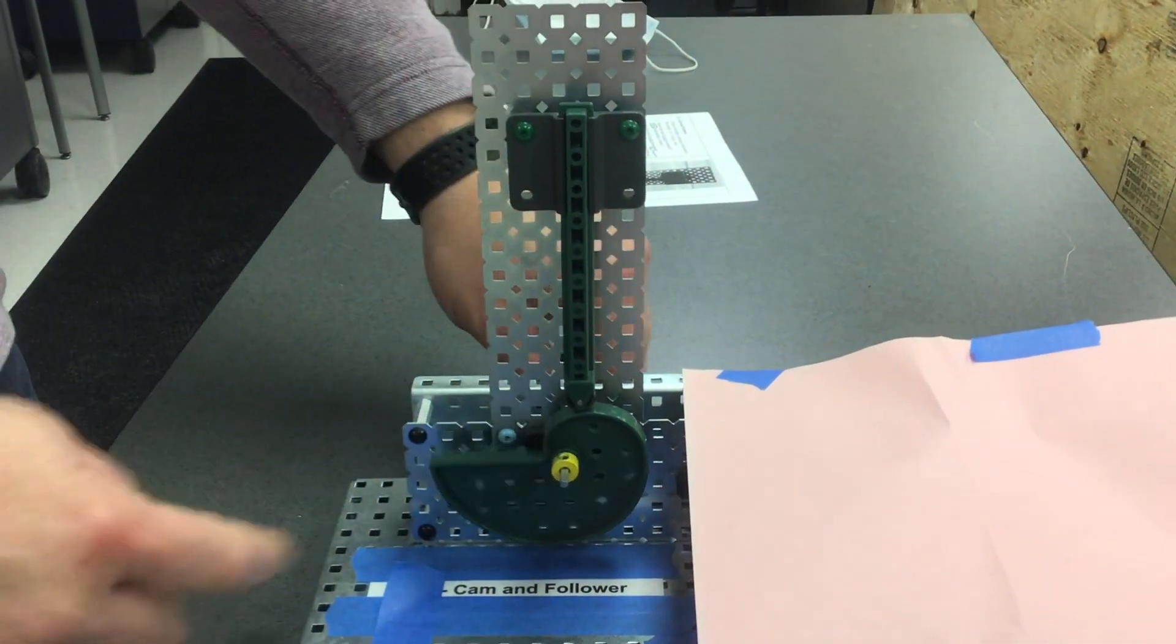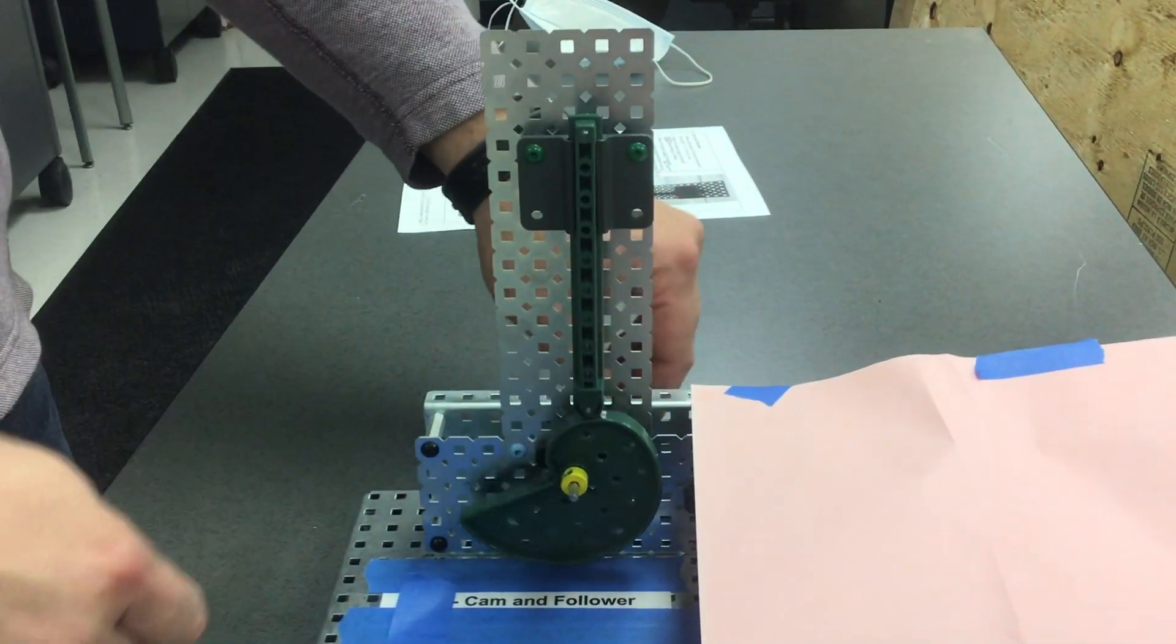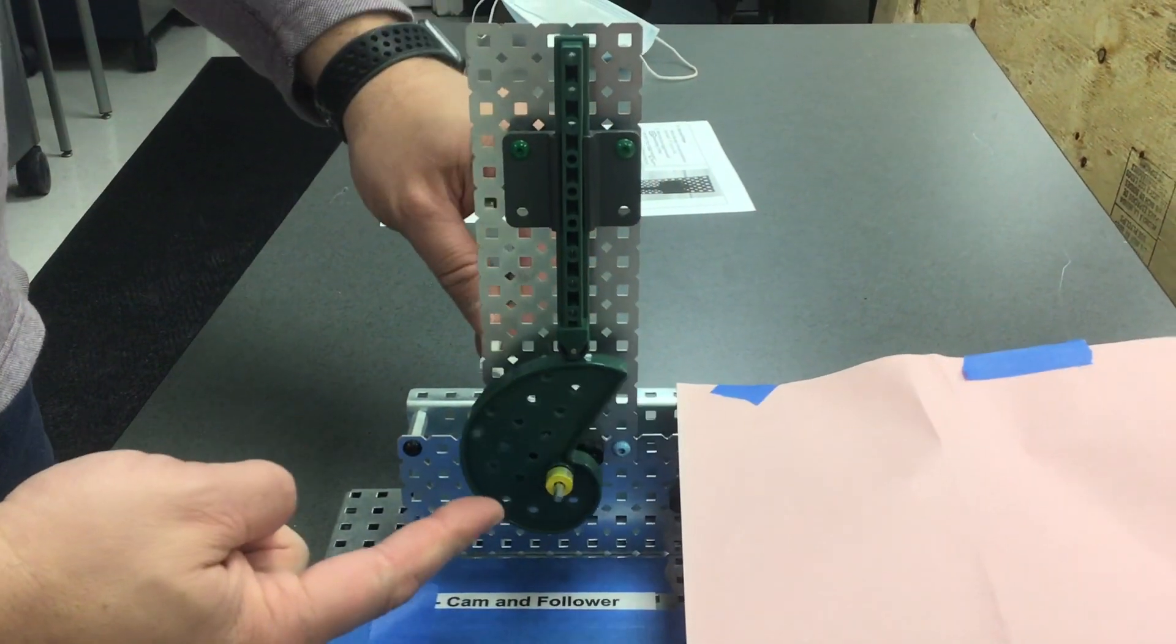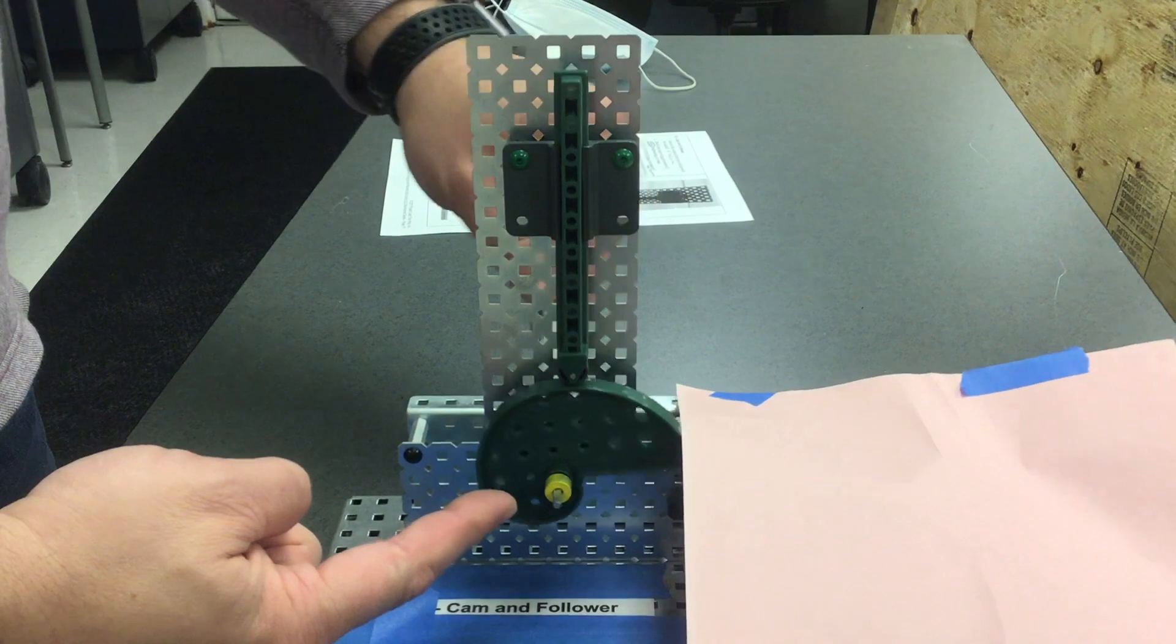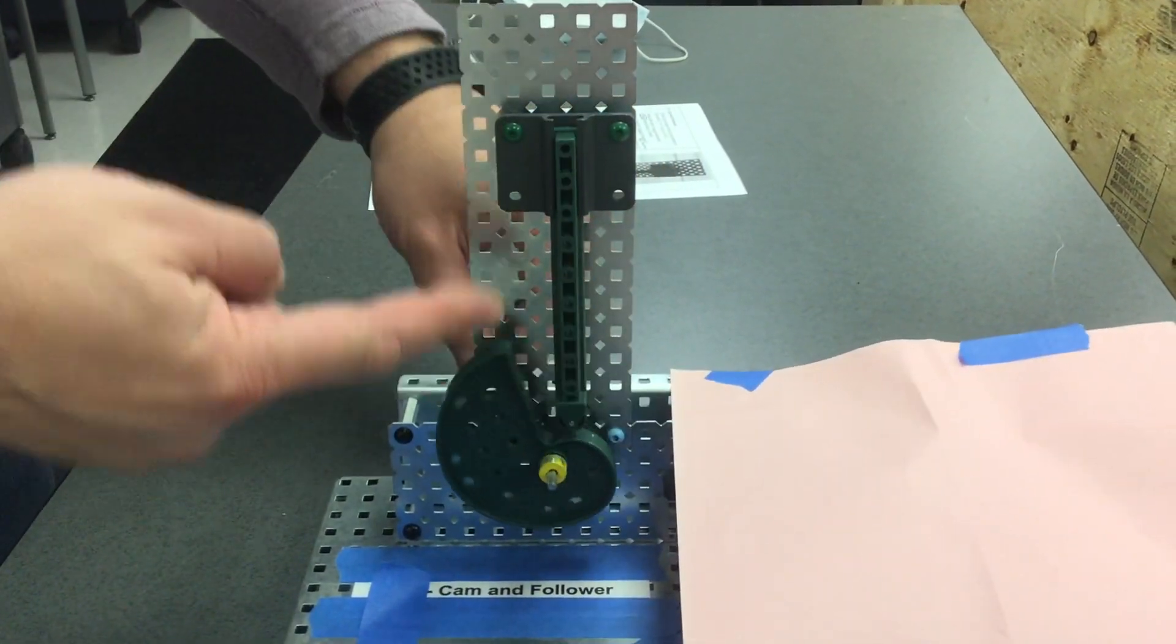We have an output movement of reciprocating. Rotary movement to reciprocating, transferring that type of movement. So our input is rotary, and our output is reciprocating.